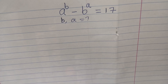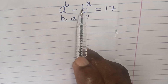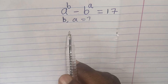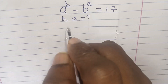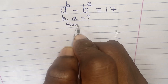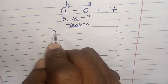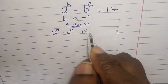Welcome guys to today's video. Here comes another series of challenge which reads: a to the power of b minus b to the power of a equals 17. We are looking for the possible values of b and a. Please if you are new here, kindly subscribe and turn on the notification button so that you get notified anytime I drop videos. So simply say solution — in order for us to solve this.